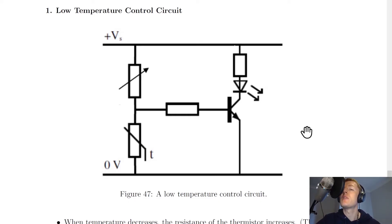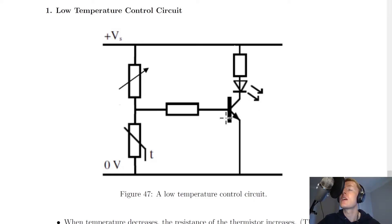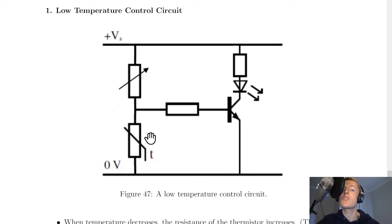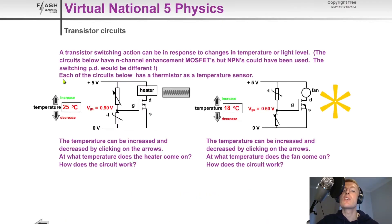You could also think about this backwards. If the LED is on, then the voltage across the transistor must be high enough for it to be switched on, which means the voltage across the thermistor must be high, which means the resistance of the thermistor must be high as well, which means the temperature must be low.